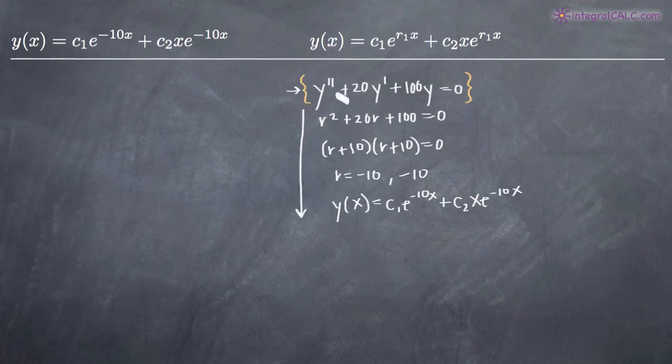We would swap out our y double prime, y prime and y for r squared, r and 1. And then we would factor our problem. We would find the roots of the equation. In this case, you can see they are equal real roots because negative 10 and negative 10 are equal to each other and they are real numbers.